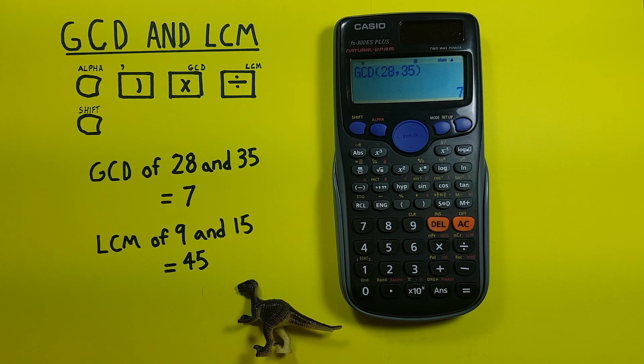And we can see that the greatest common divisor of 28 and 35 is 7 which may make sense because we know that 7 goes into both 28 and 35.